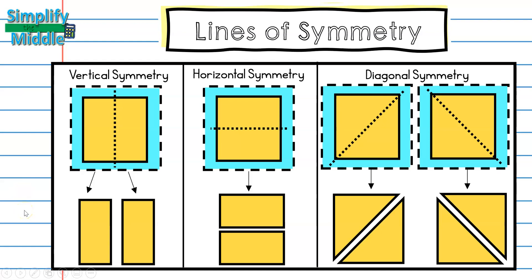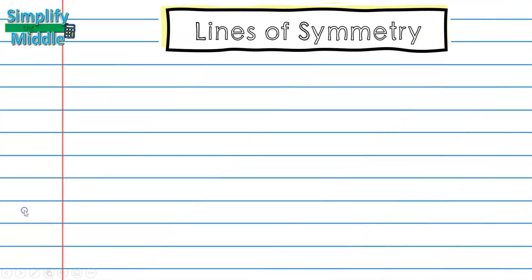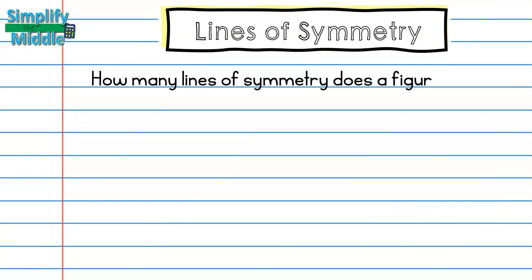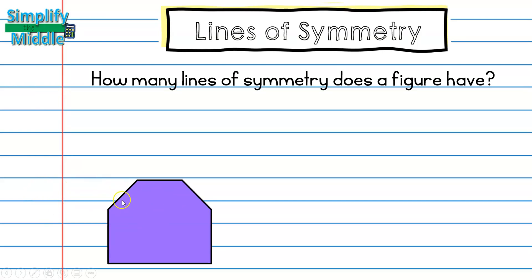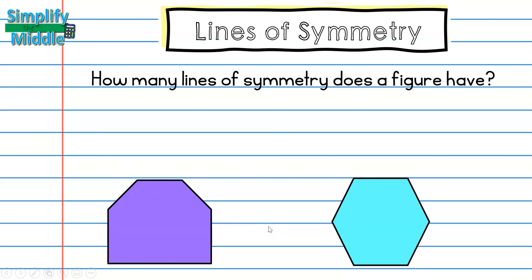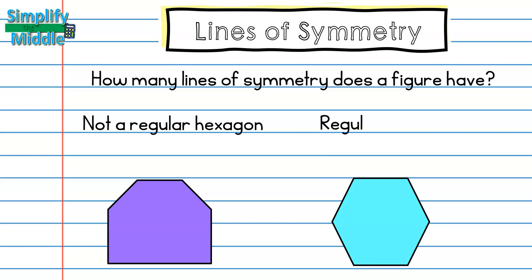Now that we're more familiar with types of symmetry, we're going to look at how many lines of symmetry a figure can have. Here I have a figure — counting the sides: one, two, three, four, five, six — so this is a hexagon, but it is not a regular hexagon. Here I have another shape — one, two, three, four, five, six — this is a hexagon as well, but this one is a regular hexagon. A regular polygon has all side lengths the same and all angle measures the same. Now I'm going to start to look for the lines of symmetry.